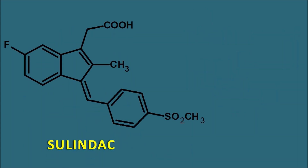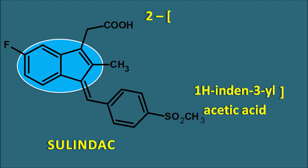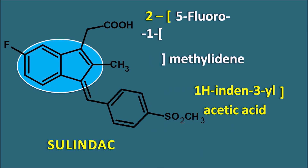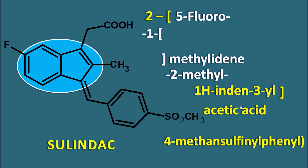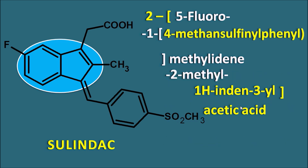The next drug is sulindac. Sulindac has a similar structure but without the heteroatom — it uses the indene nucleus instead of indole. So it is 2-(1H-inden-3-yl)acetic acid. Looking at the side chains: there is a fluoro group at the fifth position (5-fluoro), and at the first position a methyl group is attached by a double bond, written as 1-methylidene. This methylidene group is further attached with a phenyl ring, which has a methanesulfinyl group at the fourth position (4-methanesulfinylphenyl). That is the name of sulindac.